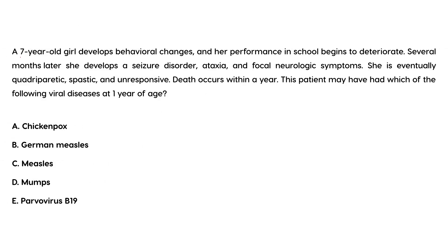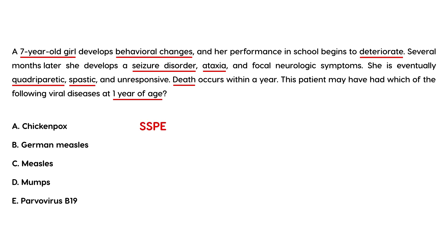Vignette one: A seven-year-old girl develops behavioral changes and her performance in school begins to deteriorate. Several months later she develops a seizure disorder, ataxia, and focal neurologic symptoms. She eventually becomes quadriplegic, spastic, and unresponsive, and death occurs within a year. This clinical scenario describes SSPE, which follows some years after a measles infection — the answer is choice C.